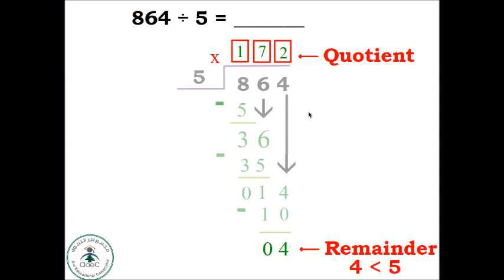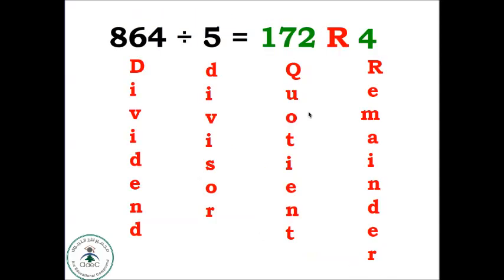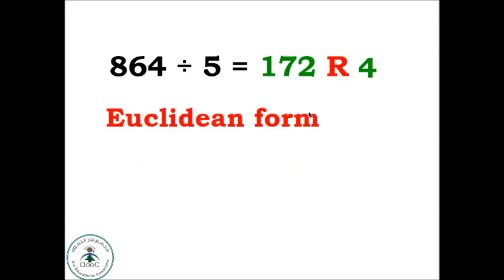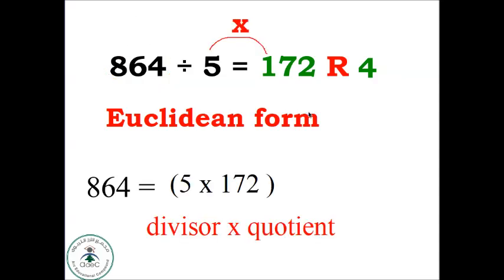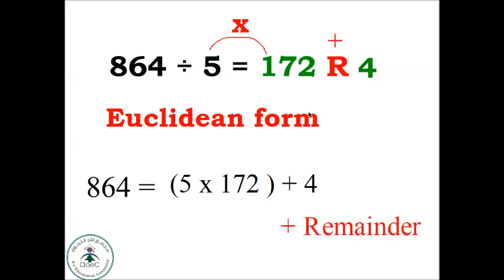The first way is to write 172 R 4. R 4 means remainder 4. So: dividend divided by divisor equals quotient R remainder. The second way is the Euclidean form. We start with the dividend: 864 equals 5 times 172 plus 4. That's divisor times quotient, then add the remainder. Remember the golden rule: 4 is less than 5.